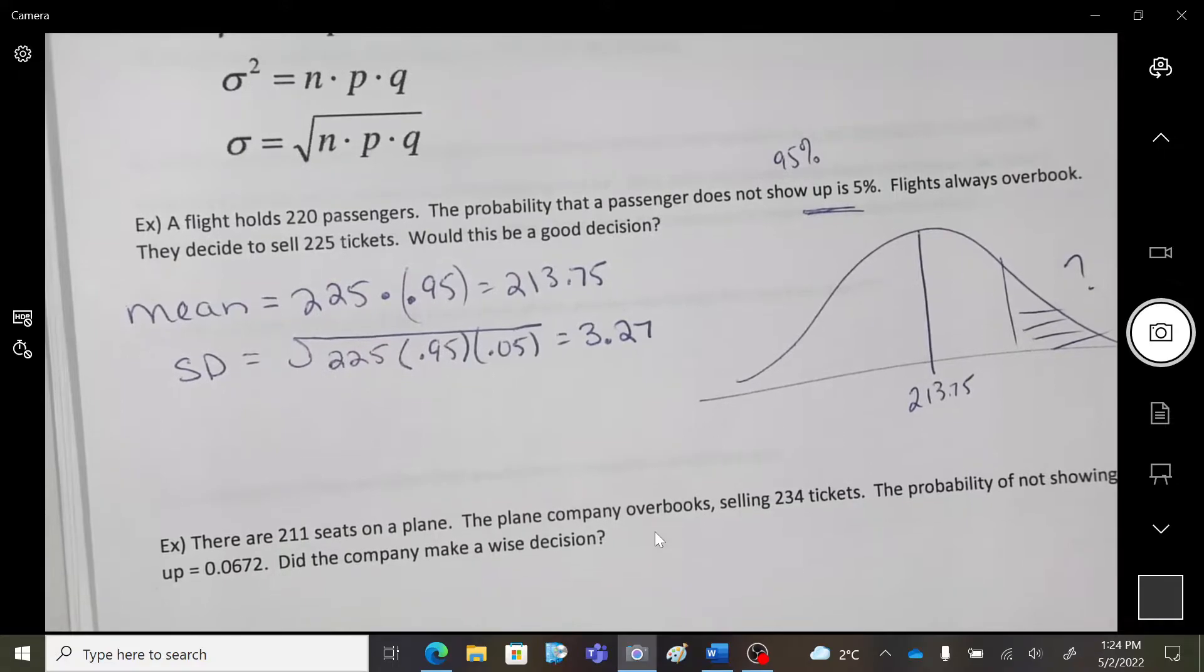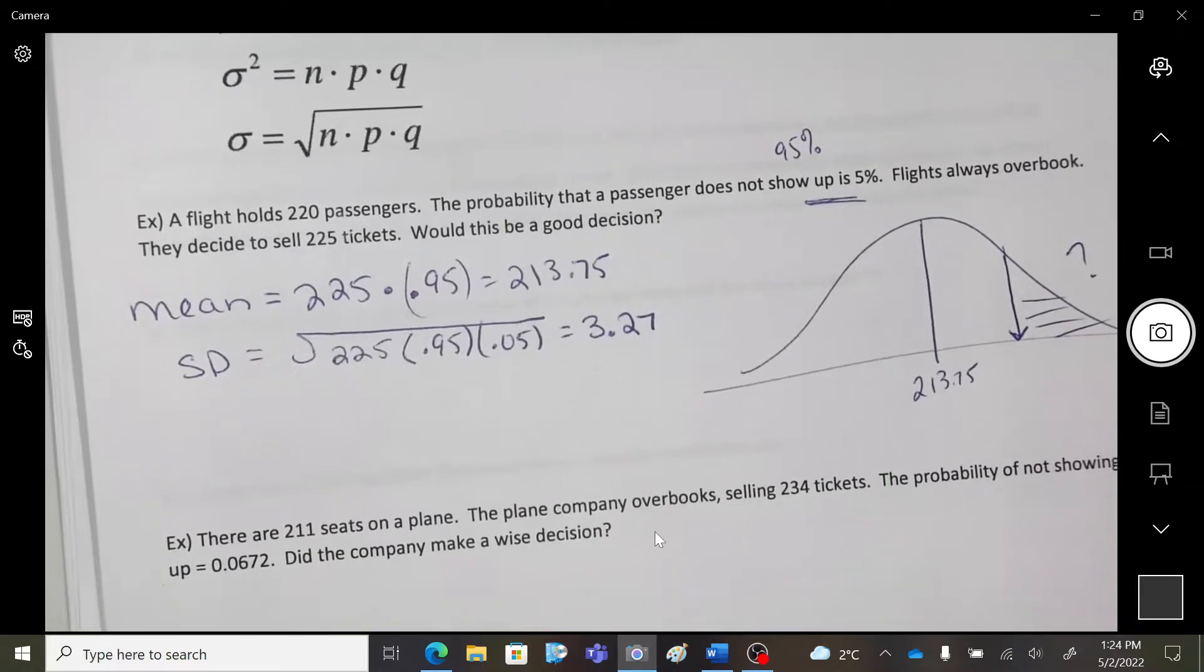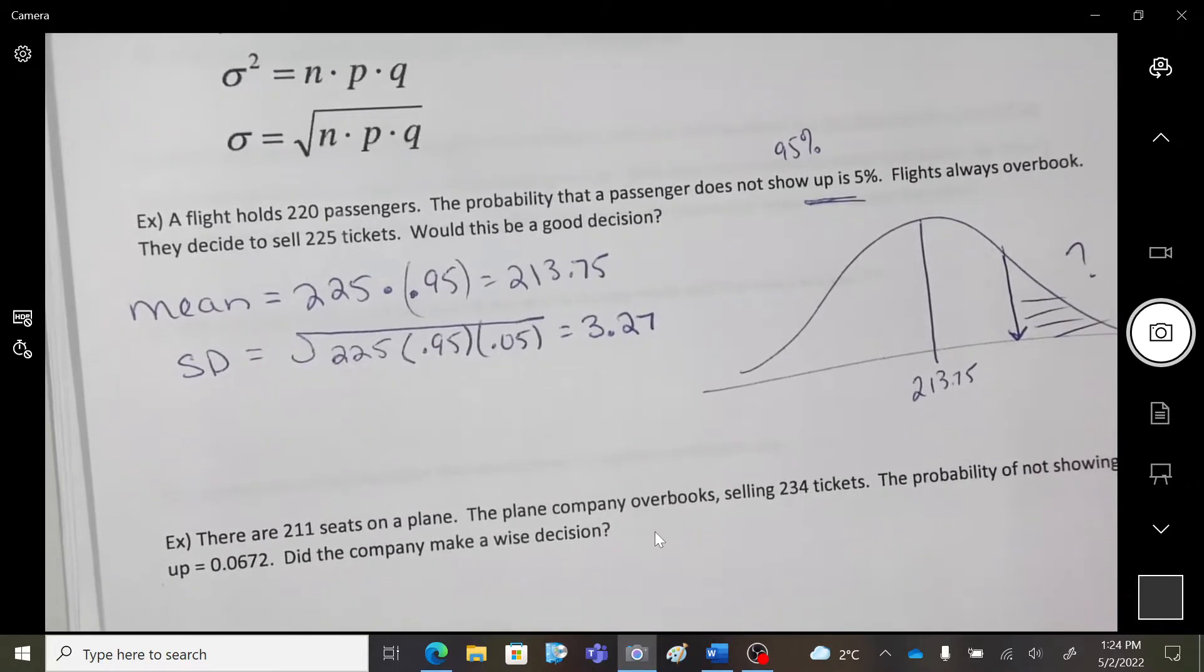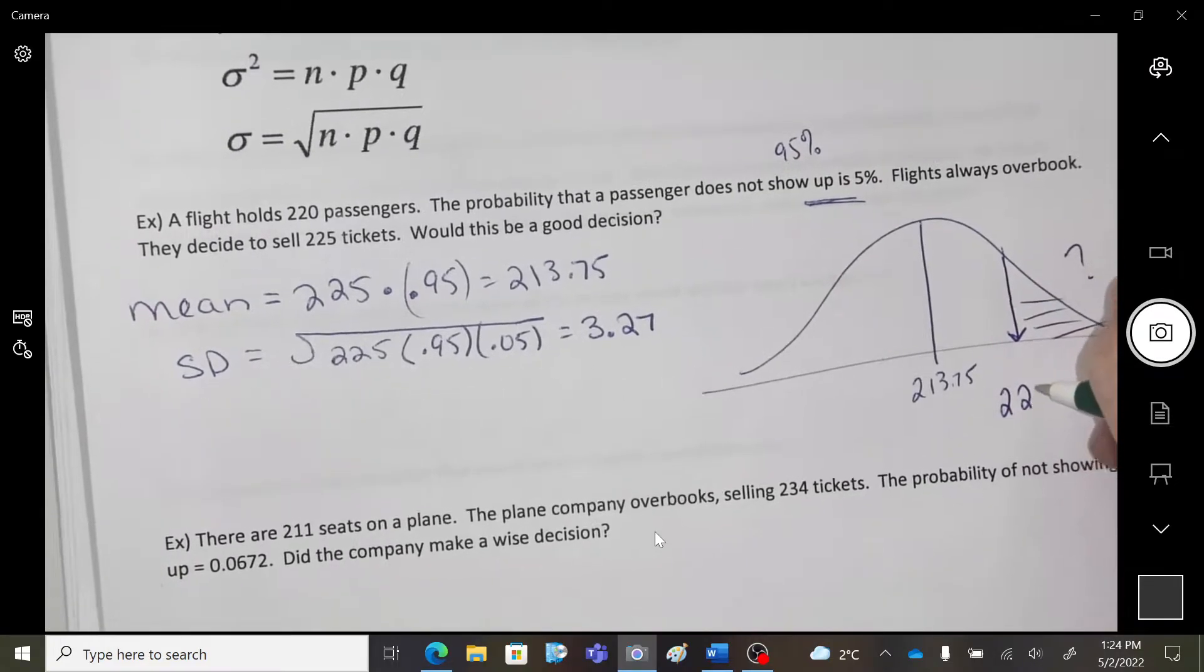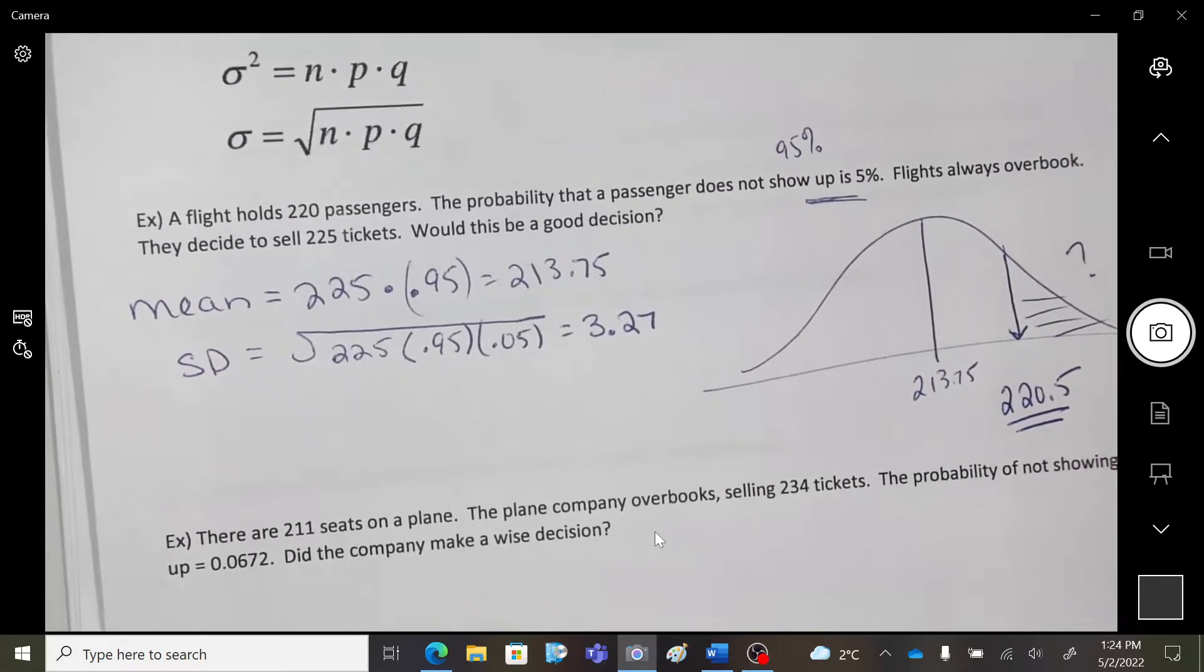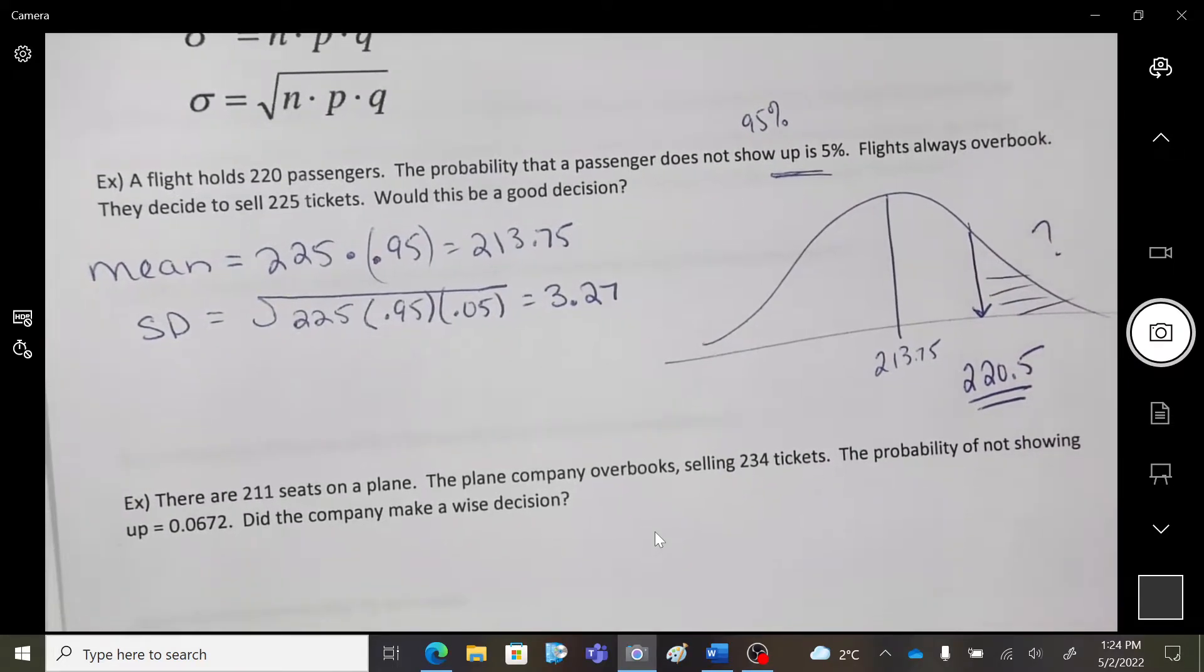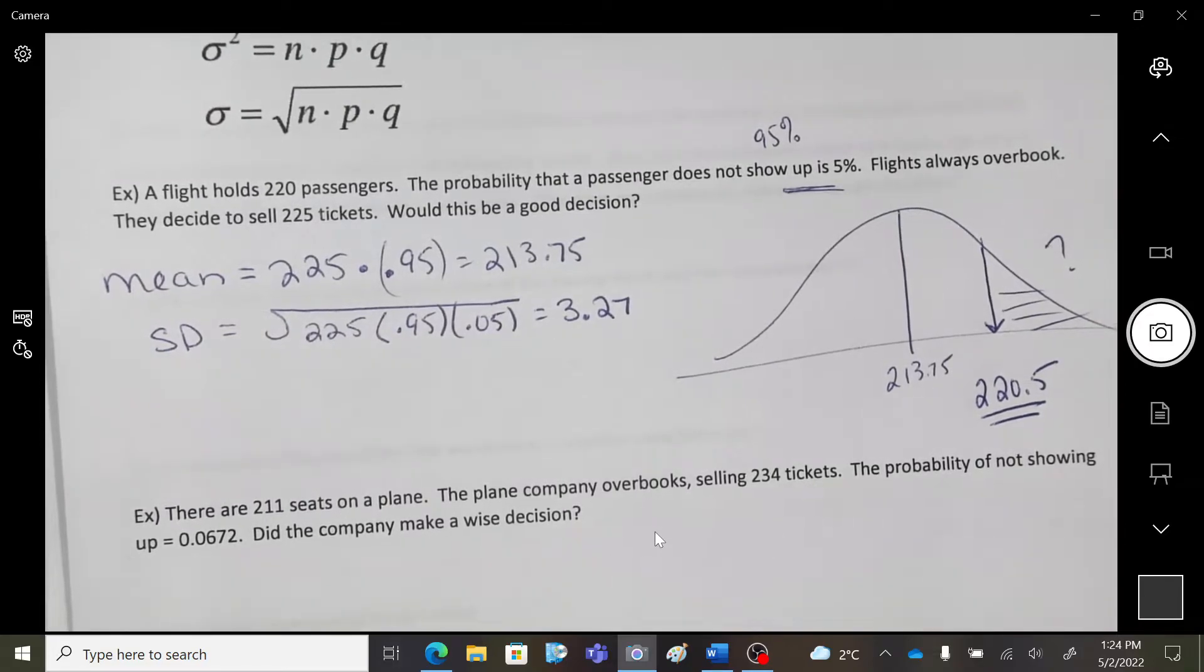Okay. This is what is a little bit tricky here. 220 is okay. I can still be at 220 tickets. It's a problem if I'm over. So, I'm going to use 220.5.